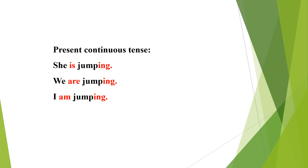We are jumping. Here, 'are' is the helping verb and we add ing with the base form of the verb. I am jumping. We use 'am' with the pronoun I — am is the helping verb, and as you can see, we add ing with the base verb.